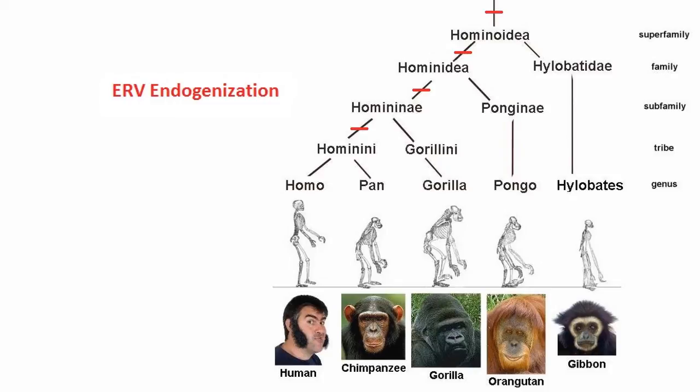This leaves only one way that an ERV could have been inherited: via sexual reproduction of organisms of a species that later diverged into the ones the organisms that share the ERV belonged to — i.e., an ancestral species. Simply put, humans and the other primates must share common ancestry.